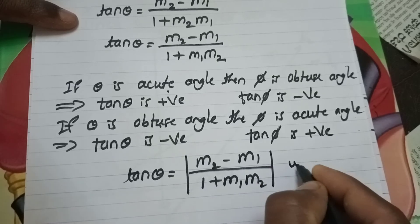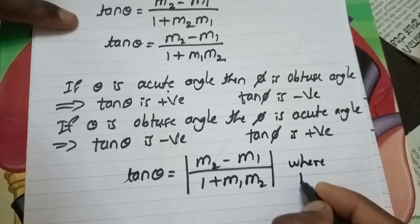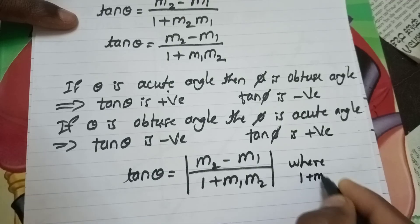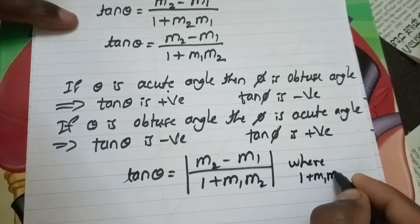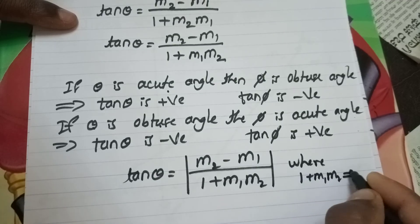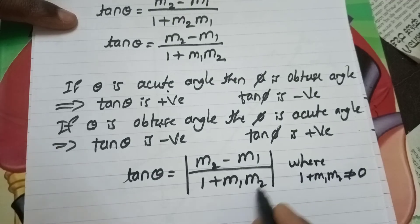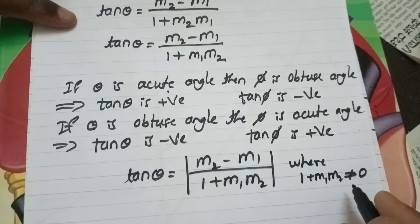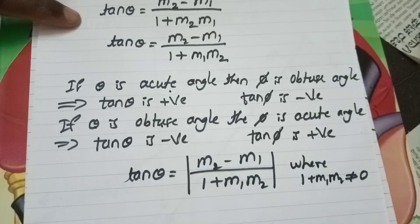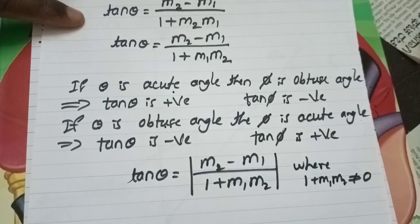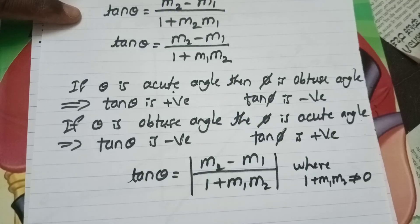The final formula is: tan(theta) equals the modulus of (M2 minus M1) divided by (1 plus M1 times M2), where 1 plus M1 times M2 is not equal to zero. This is the formula for the angle between two lines.